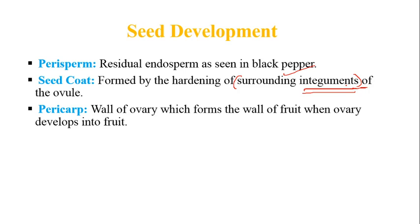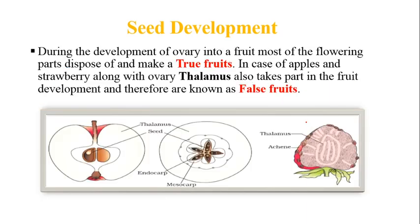The wall of the ovary becomes the wall of the fruit — called the pericarp — when the ovary develops into the fruit. During this development, most other floral parts like petals and sepals fall off and are disposed of, making it a true fruit. However, in some fruits like apples and strawberries, the thalamus also develops along with the ovary — these are called false fruits. In apples, we mostly eat the thalamus.